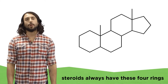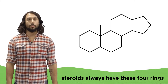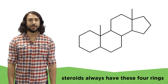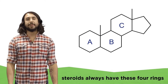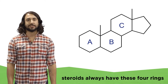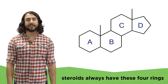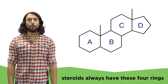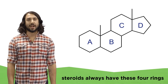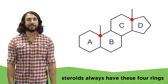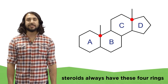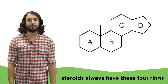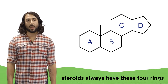Steroids are all derivatives of this ring system, which is comprised of four rings. The A, B, and C rings are six-membered rings while the D ring is a five-membered ring. There are also always methyl groups on these two carbons, and for ease of communication we will always number this ring system the following way.